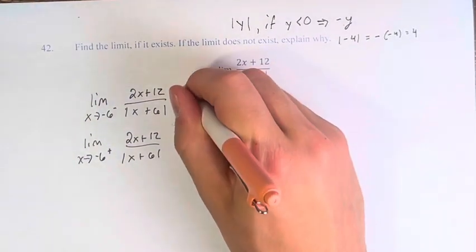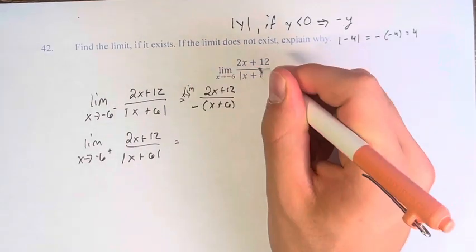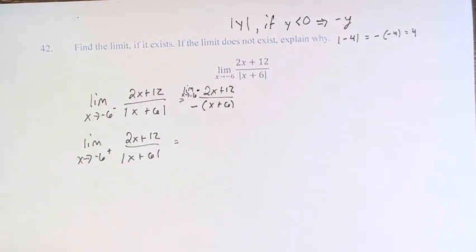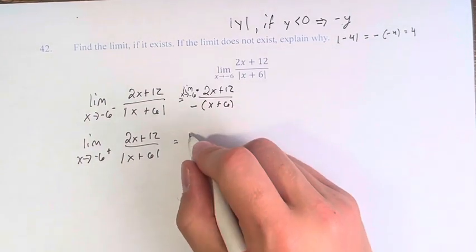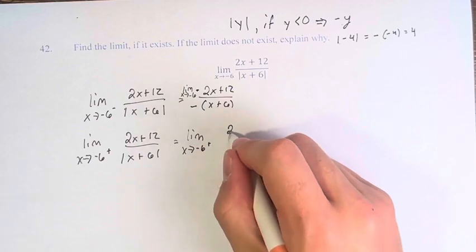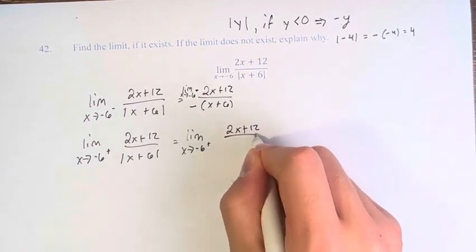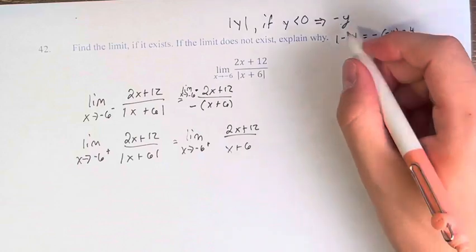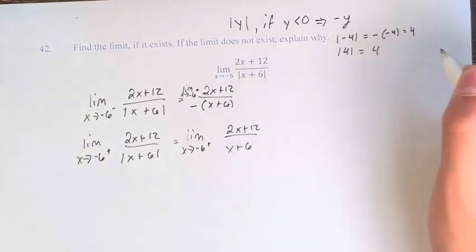Now, therefore, I'm sorry, I should specify that this is still a limit. We have the limit as x approaches negative 6 from the right of 2x plus 12 over positive x plus 6. These are positive numbers, so absolute value of 4 is just 4.